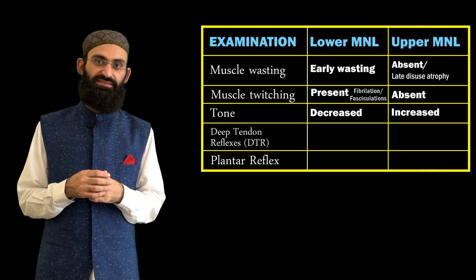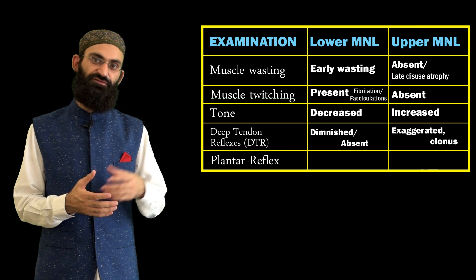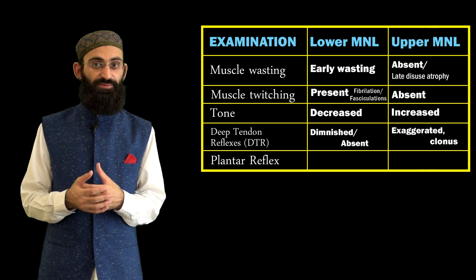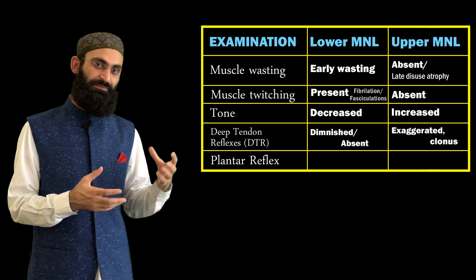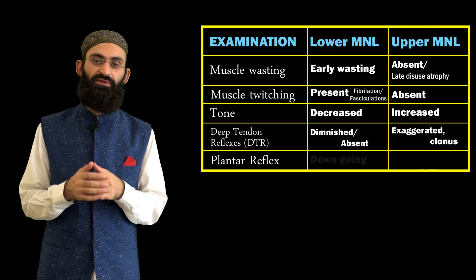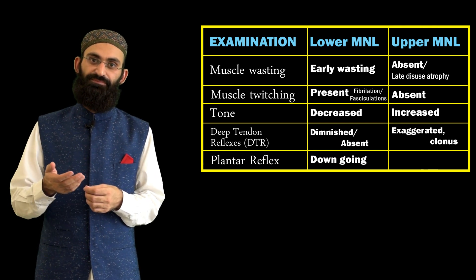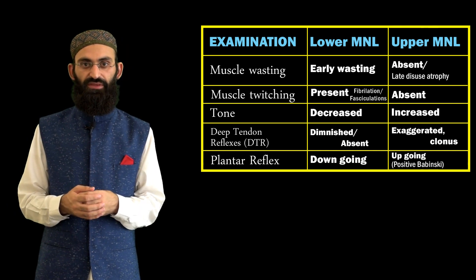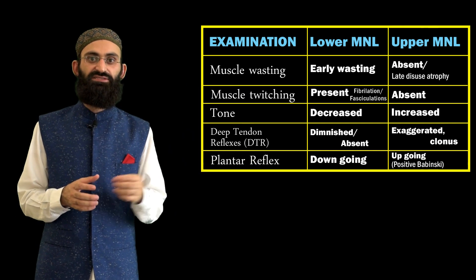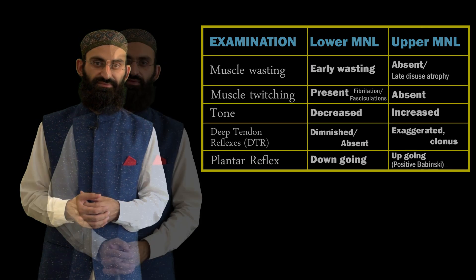Deep tendon reflexes are diminished or absent in lower motor neuron weakness and exaggerated in upper motor neuron weakness. Clonus is a hyper-exaggerated deep tendon reflex seen in upper motor neuron weakness. For the plantar reflex, stroking along the lateral border of the sole normally causes the big toe to go down. In upper motor neuron weakness there is a positive Babinski response — big toe goes up and other toes fan out. In acute upper motor neuron weakness, these classical signs may not be present, and the only useful clue may be an upgoing plantar.